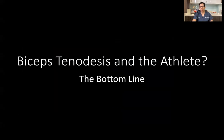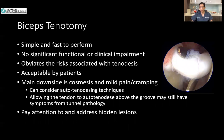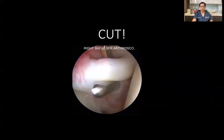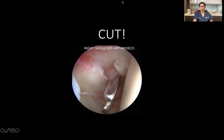As far as biceps tenotomy and the athlete is concerned — including both young and older athletes — the bottom line is that biceps tenotomy is a simple and fast procedure with no significant functional or clinical impairments, obviating the risks associated with biceps tenodesis. The procedure is acceptable to most patients; the main downside is cosmesis and some mild pain or cramping, which does tend to resolve. However, if considering auto-tenodesis techniques, remember that lesions down in the bicipital tunnel or distal extra-articular portion of the biceps tendon may result in persistent pain. Pay attention to and address hidden lesions as far as possible. Thank you very much.